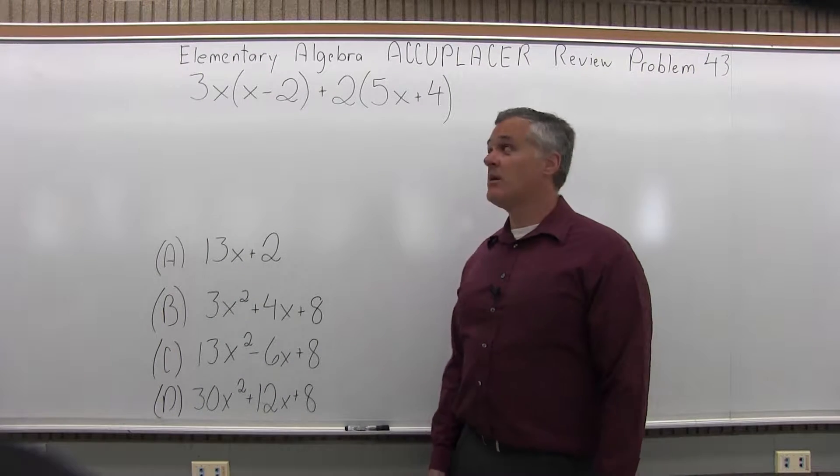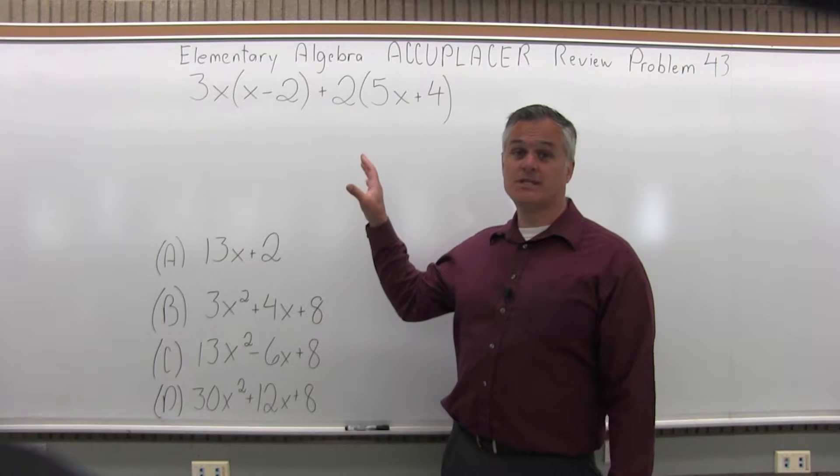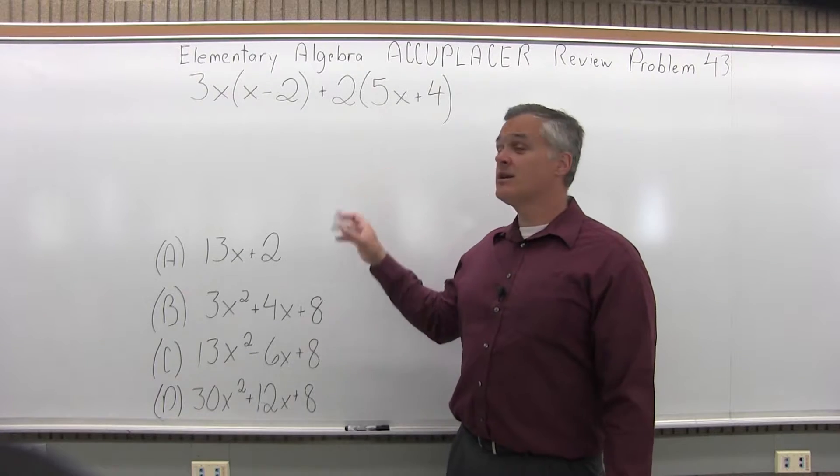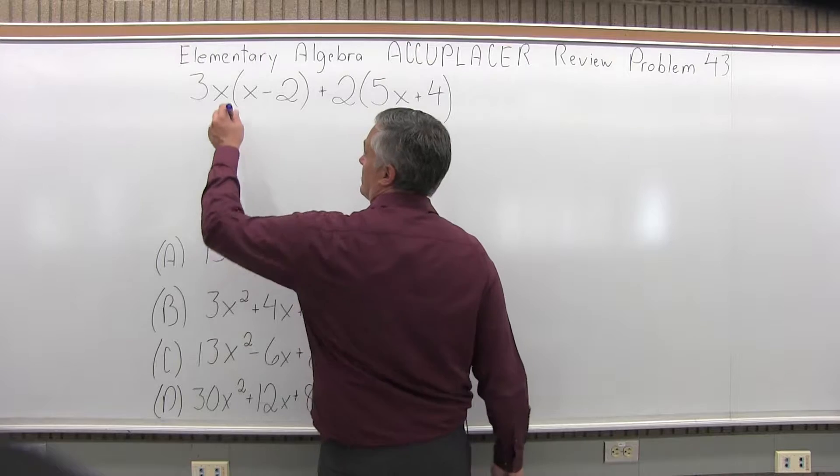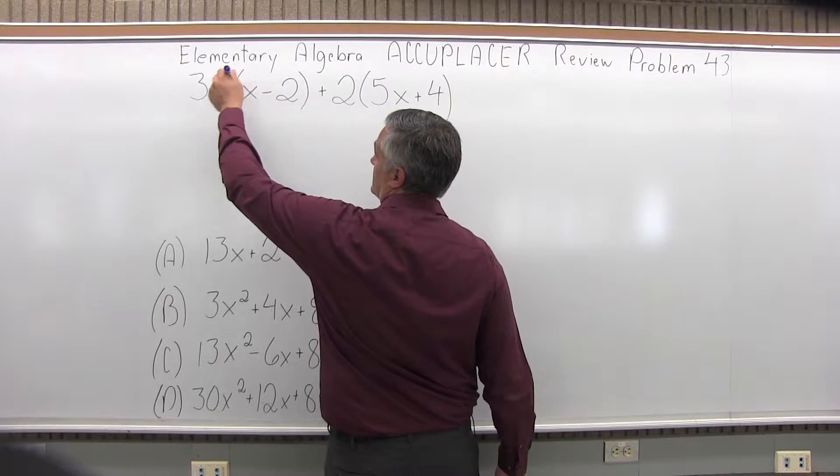So I want to clear the parentheses by multiplying the item in front of the parentheses times each item in the parentheses, then combining my like terms. So for the first set of parentheses, I'm going to do 3x times x minus 2.